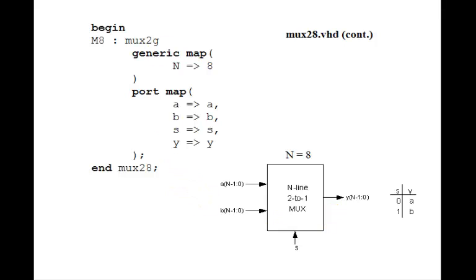And then, in the port map statement, in addition to port map, before that we have this generic map. So here's mux 2g, and we say generic map, and then n gets assigned the value of 8. So here is where we actually assign how many lines we want this to have. Just set n equals to 8.